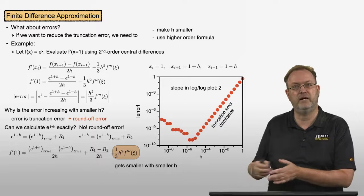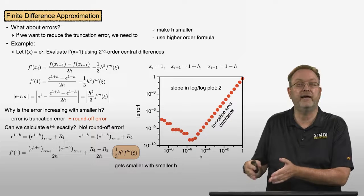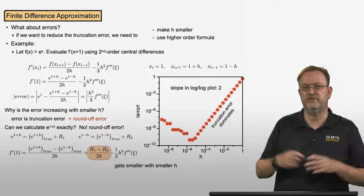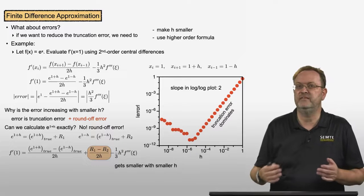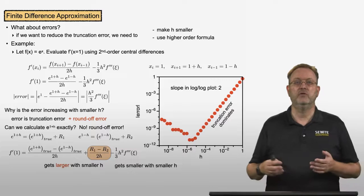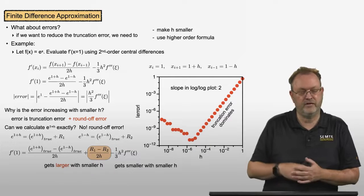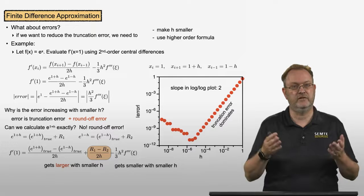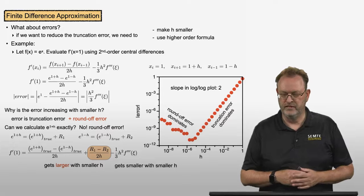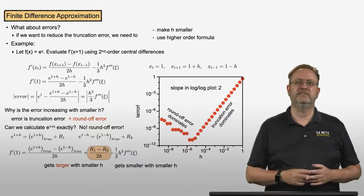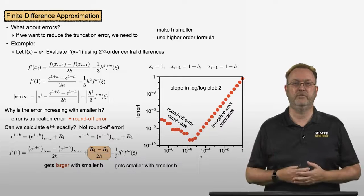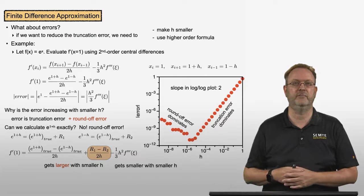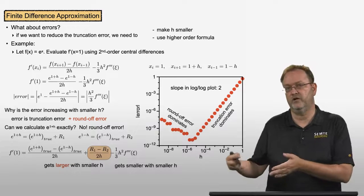The right part of the graph is the area where the truncation error is dominant and larger. But the round-off error terms — the difference of two round-off errors — get divided by h. So if I make h smaller and the round-off errors stay comparable, I'm dividing by ever smaller values of h, and therefore this part of the error gets larger with smaller h. That causes the increase. The left part of the graph where the error increases is the area where round-off error dominates.